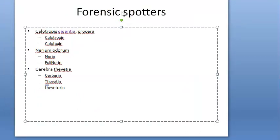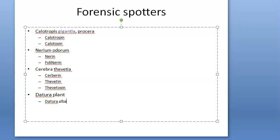Datura is a poisonous plant. There are two types: datura alba and datura niger. Niger has purple flowers and alba has white flowers. The fruits are spherical with short spines.